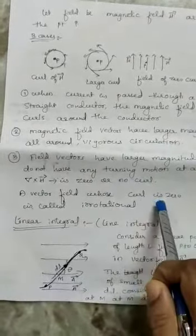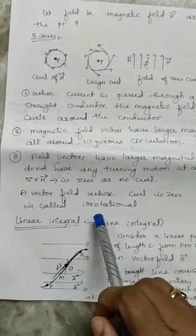A vector field whose curl is zero is called irrotational.